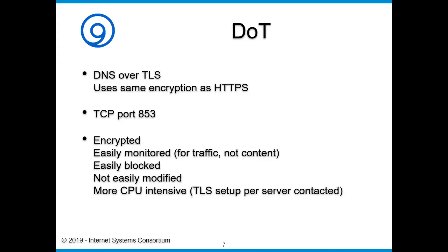DOT traffic is very easily blocked because we have a specific port number — port 853. We're able to shut it down and see where queries are being sent and where responses are coming from, but we are not able to look at the data inside. It's very difficult to modify because it's encrypted. We are adding a detriment though — more CPU-intensive use, forced to do all the encryption, and TLS setups and teardowns for each server contacted. There's pipelining over TCP, but a lot of tuning to learn.